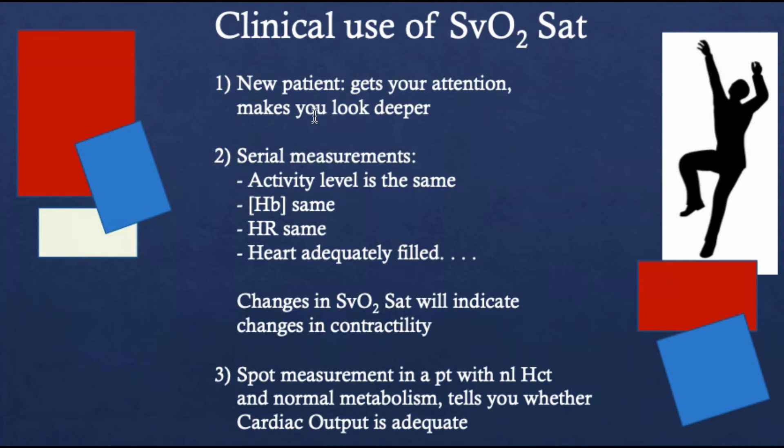Another application is in the setting of serial measurements, especially when the activity level of the patient is the same—like they're paralyzed, sedated in bed, or just hanging out. If the hemoglobin is the same, the heart rate is the same, and the heart is adequately filled, then a change in mixed venous O2 saturation—a lowering—will indicate that there's a change in heart function and contractility. Sometimes this is a tip-off that someone is developing a septic cardiomyopathy when you have the heart properly filled and there's not any bleeding and there's no change in activity level or metabolism. All of your determinants of VO2 and DO2 are totally the same except for stroke volume, and that can point to the heart as a culprit. It's used very extensively in that setting.